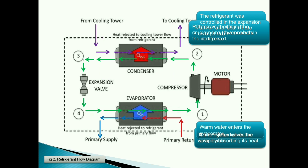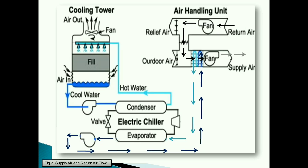The water from the cooling tower cools the refrigerant. The refrigerant is controlled in the expansion valve and returned to the evaporator. Refrigerant enters the compressor, then proceeds to the condenser. Chilled water leaves the evaporator as the refrigerant chills the water by absorbing its heat. Warm water enters the evaporator.